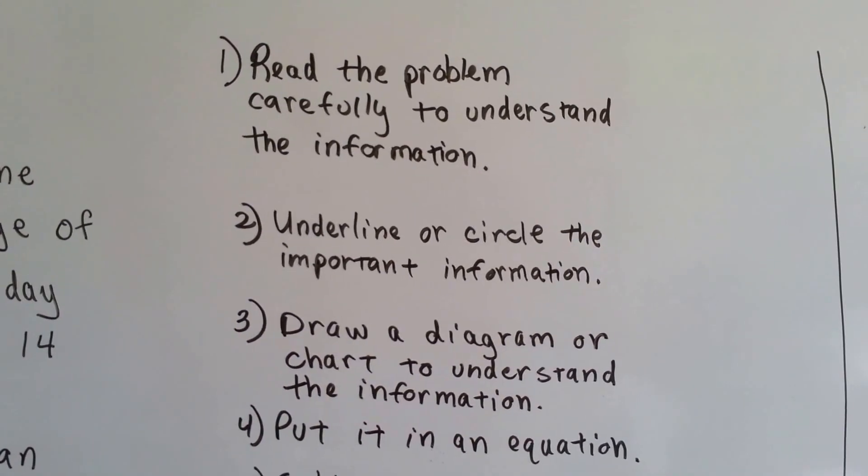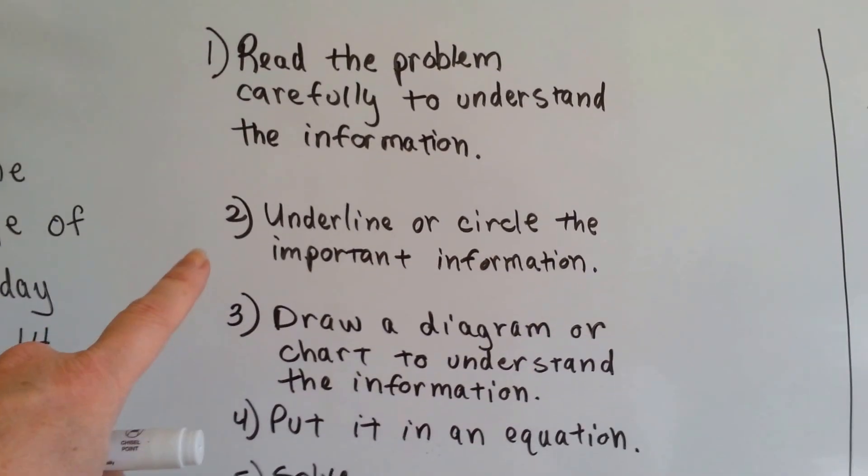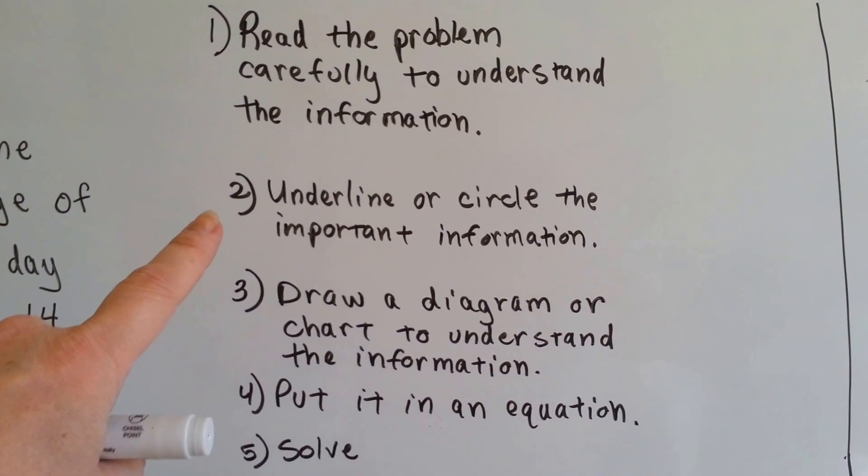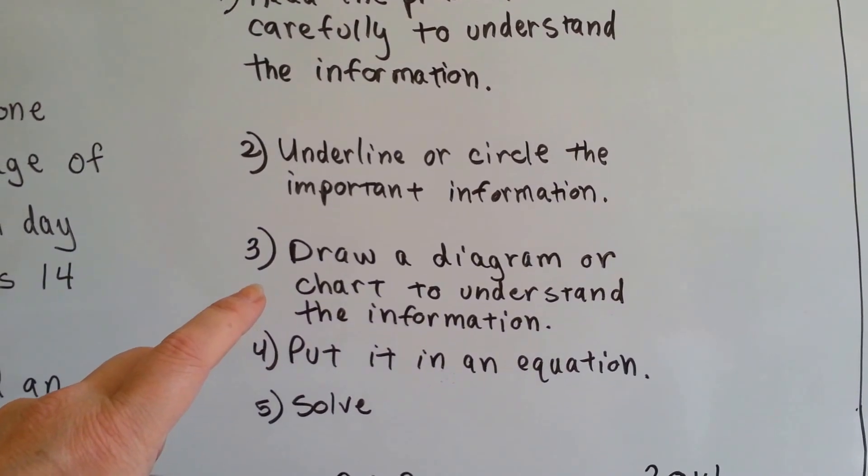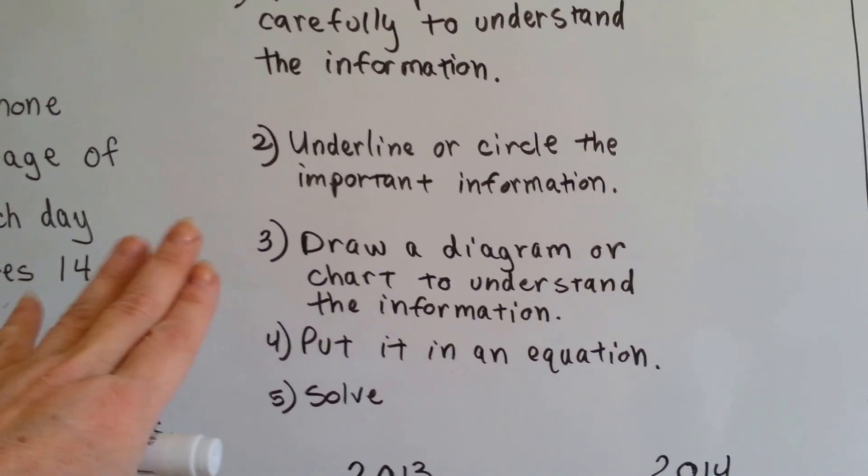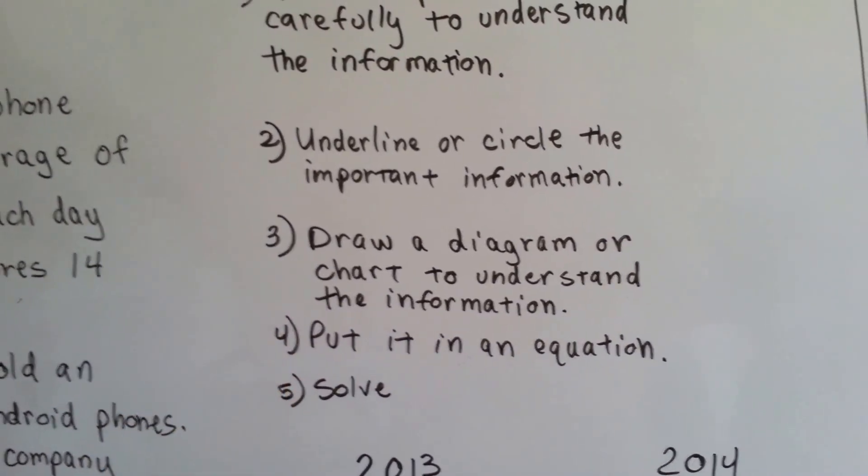The first thing we have to do is read the problem carefully to understand the information. Then we need to underline or circle the important information. Then we need to draw a diagram or chart to understand the information and put it out in front of us so we can really look at it. Then we need to put it into an equation and then solve it.